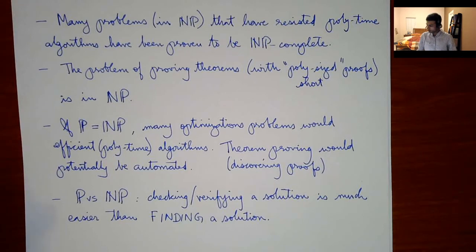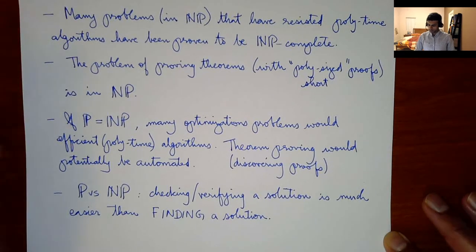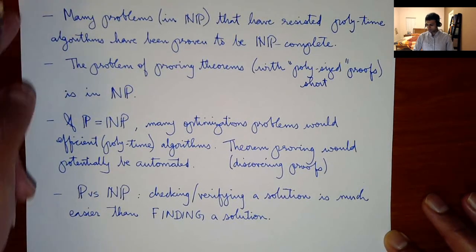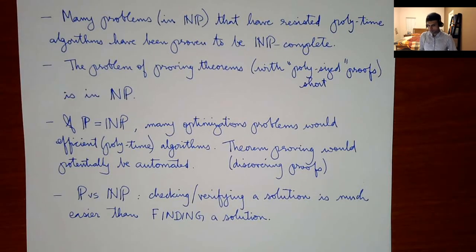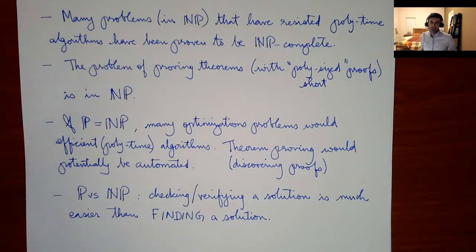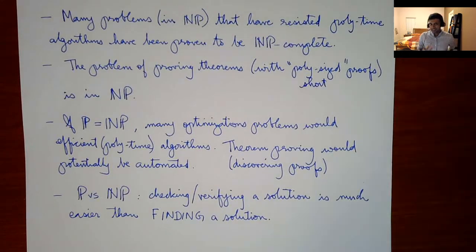Student question: Is it possible that even if P equals NP, the poly-time solution for NP-complete problems could be something like n to the 1 billion? That's a very valid point. Some people say maybe P is equal to NP but SAT has an n-to-the-100 time algorithm, which is not efficient by any standard. On the other hand, asymptotically n to the 100 is less than 2 to the n, so there is some structure there that allows you to not search all solutions.